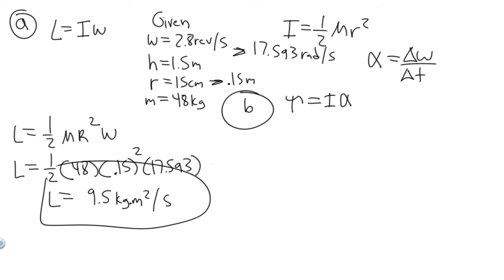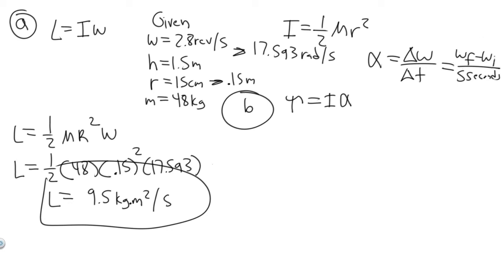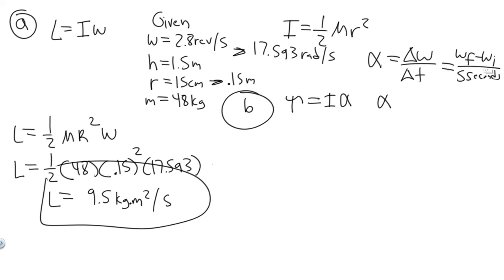The time period is five seconds, which is how long it takes to slow to a stop. The change in angular velocity is omega final minus omega initial. She goes from her initial speed to zero, so alpha equals zero minus 17.593, divided by 5 seconds. That's how we solve for angular acceleration.